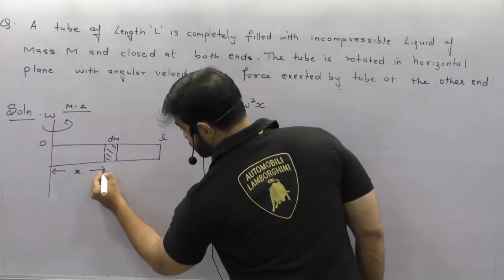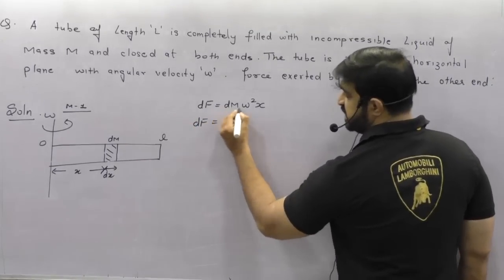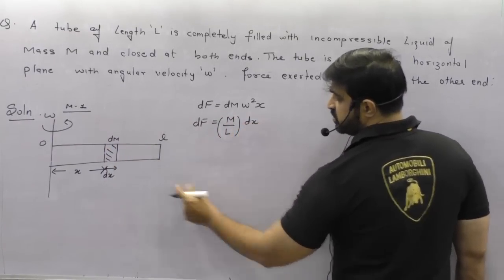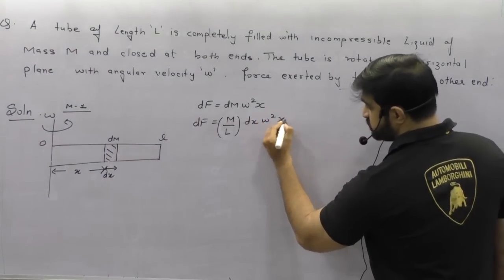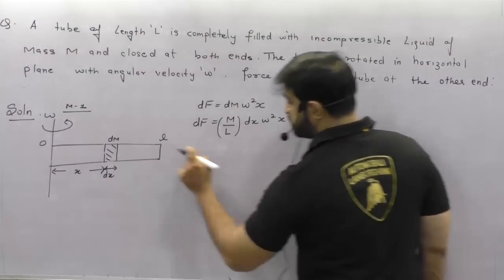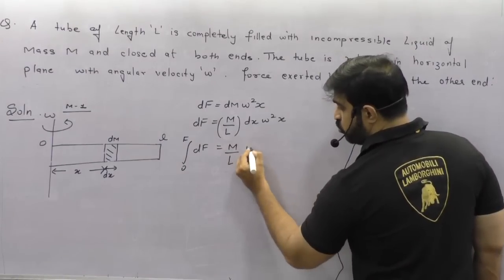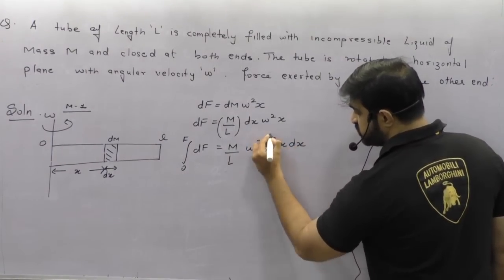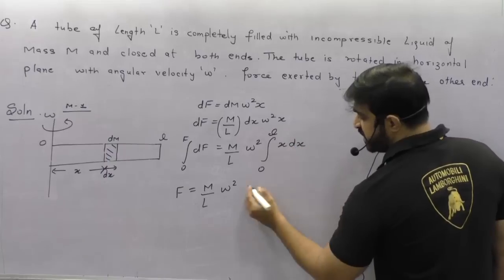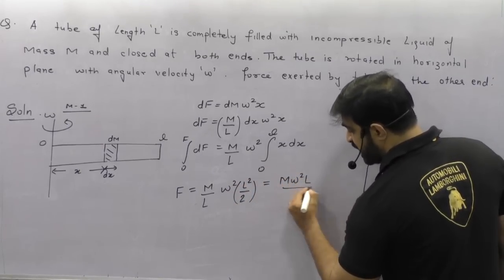Consider a small mass dm separated by a distance x from the axis of rotation. The force df exerted on this small mass = dm·omega²·x, where dm = (M/L)·dx. To find force at the other end, integrate from 0 to L: F = (M/L)·omega²·∫x dx from 0 to L = (M/L)·omega²·(L²/2), giving F = M·omega²·L/2.